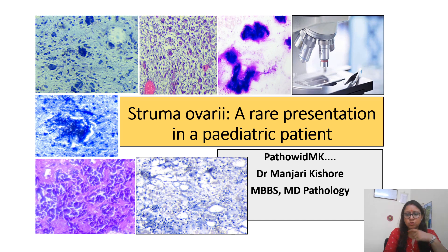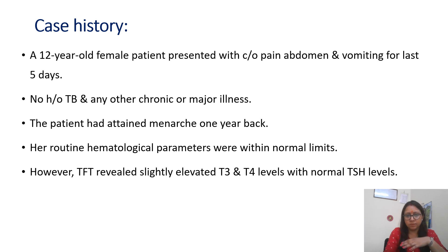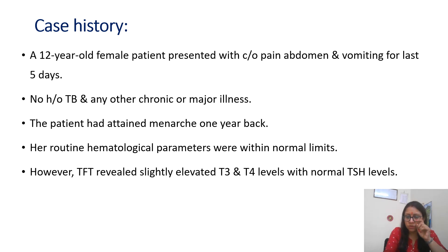This case is about struma ovarii, which was present in a pediatric patient. It was a 12-year-old female patient who presented with chief complaints of pain abdomen and vomiting for the last 5 days. There was no history of any major or chronic illness, or history of tuberculosis in the past. The patient had attained menarche 1 year back.